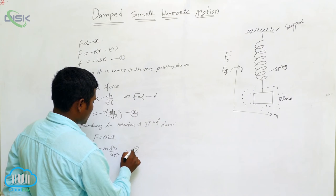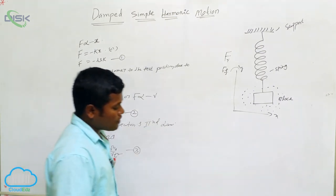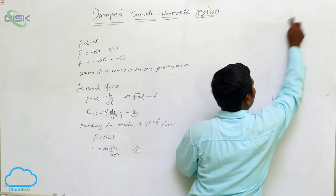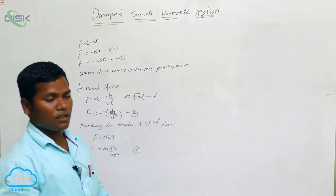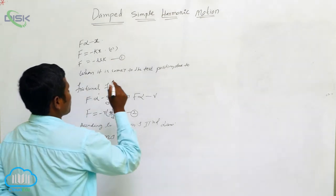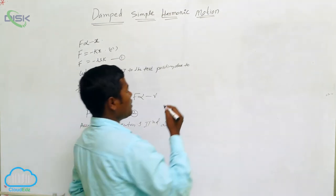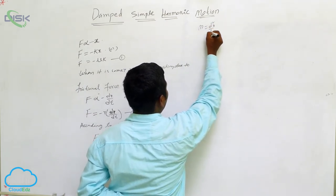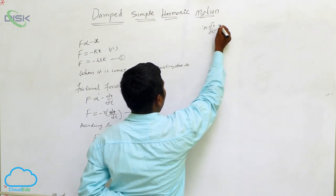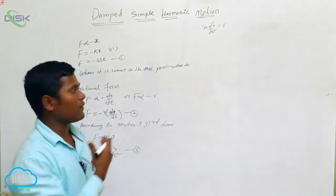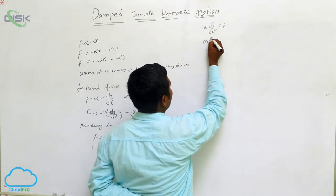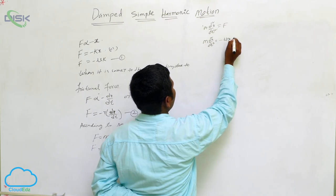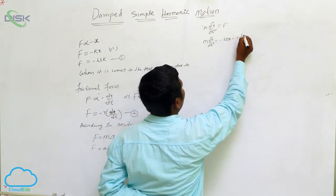From equations 1 and 2 we have two forces — frictional force and restoring force. We equate them with equation 3: m(d²x/dt²) = -μx - r(dx/dt).